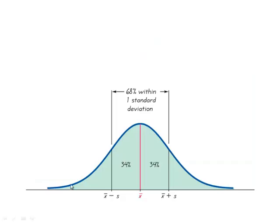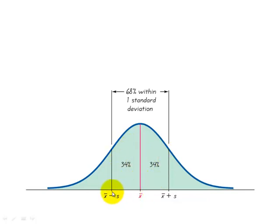The distribution is roughly bell-shaped like this one. We expect the majority of the data — approximately 68% — to be within one standard deviation below the mean and one standard deviation above the mean. So this will be about 68% of the data.